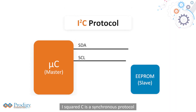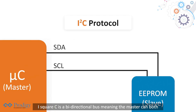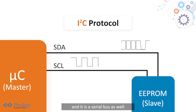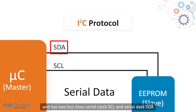I2C is a synchronous protocol that allows a master to initiate communication with a slave device. I2C is a bidirectional bus, meaning the master can both write to the slave and read from the slave. It is a serial bus and has two bus lines: serial clock SCL and serial data SDA.